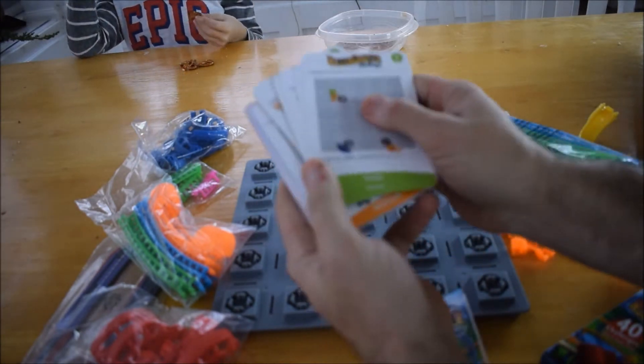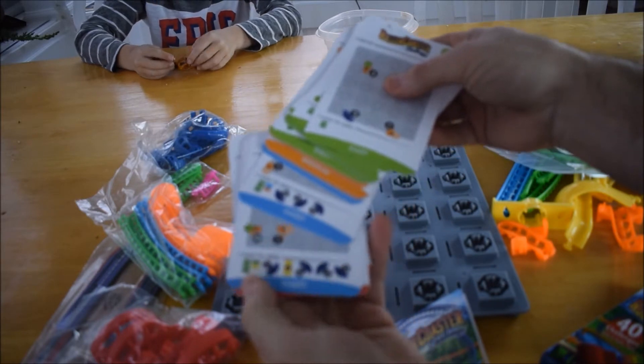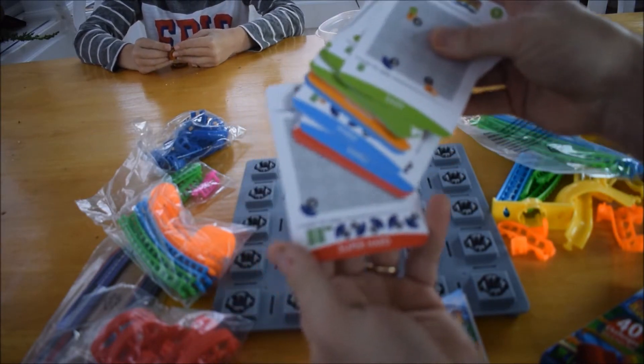In the box, you've got these little pieces here that build up the pieces that will go here. You've got the playing cards here. Green for easy, orange for medium, blue hard,